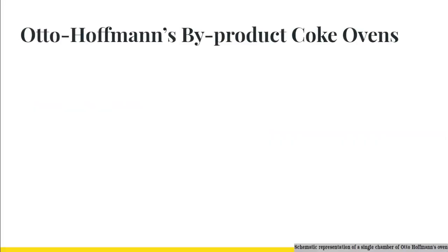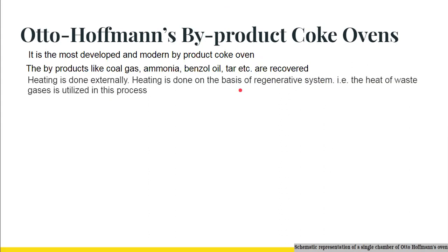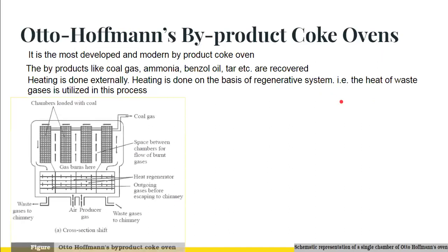Now let us discuss the Otto Hoffmann's Byproduct Coke Oven process. As the name suggests, byproducts are recovered in this process. It is the most developed and modern byproduct coke oven, and byproducts like coal gas, ammonia, benzol oil, and tar are all recovered. Heating is done externally on the basis of a regenerative system, meaning the heat of the waste flue gases is utilized. So heat is not wasted in this process.